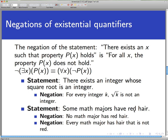Here's another example that's less mathematically oriented: 'Some math majors have red hair' — that is, there exists a math major who has red hair. The negation would be 'no math major has red hair,' or more formally, switching the existential to a universal quantifier: 'every math major has non-red hair.' So again, to negate an existential quantifier, we change it to a universal quantifier with the property itself negated.